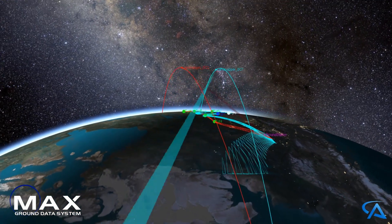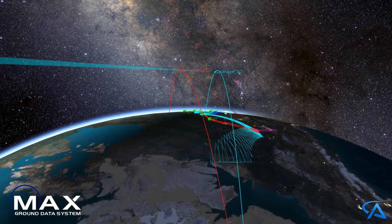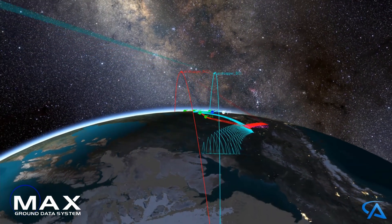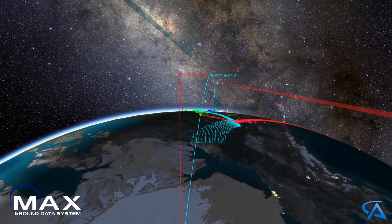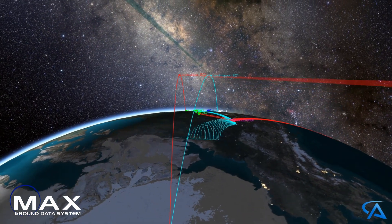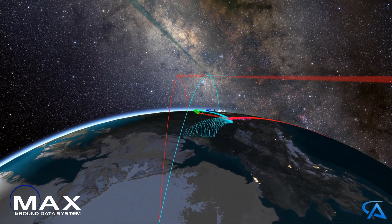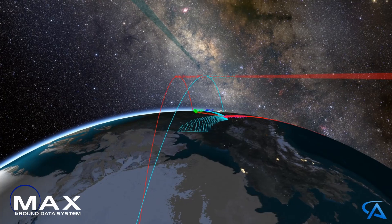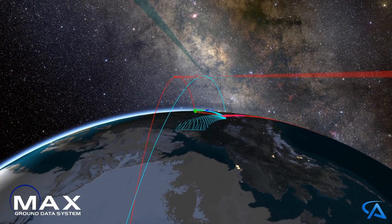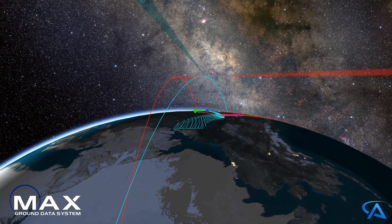Max GDS is a full-featured and scalable ground data system. With optimized satellite command and control, Max GDS is the solution for a single spacecraft or a large constellation.